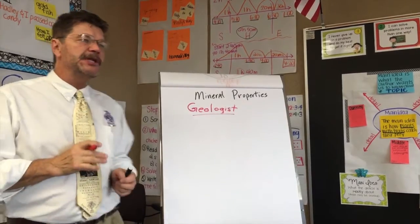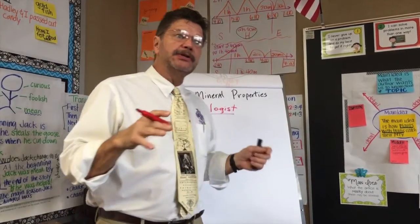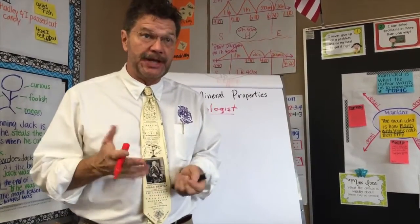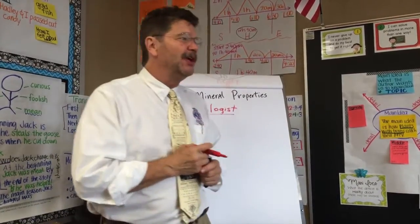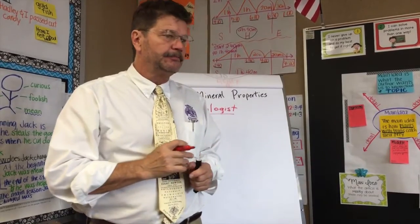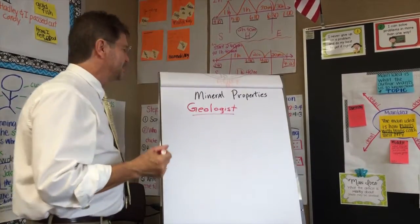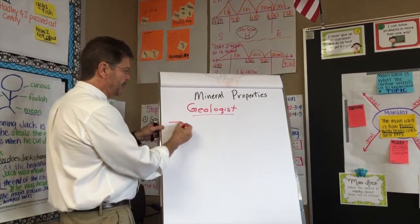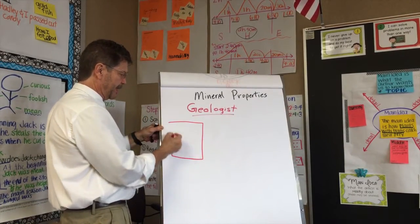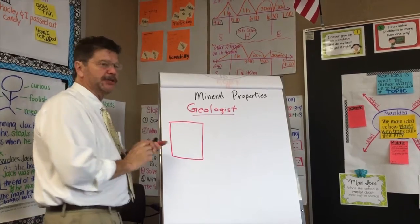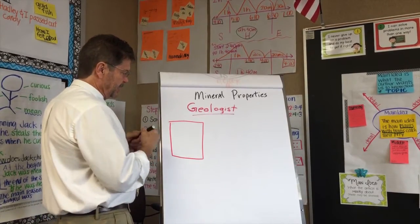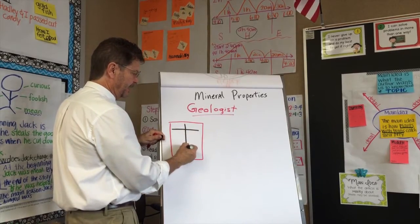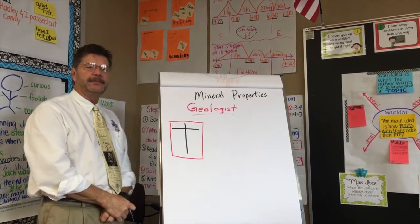We're going to do something a little special today. We're going to look at how we can compare and contrast some of the rocks and minerals on your desk. Turn your paper over and we're going to make what's called a T-chart. A T-chart means you draw a line like that, and a line like that through the top of your paper.